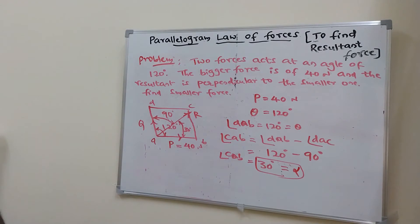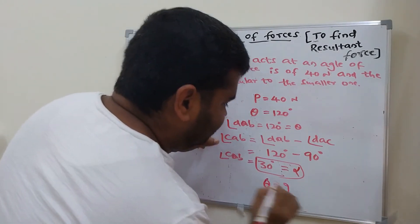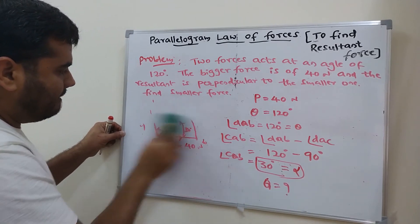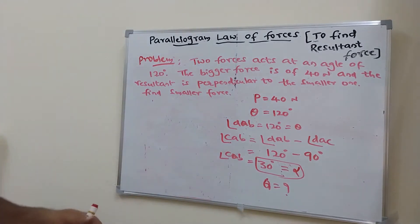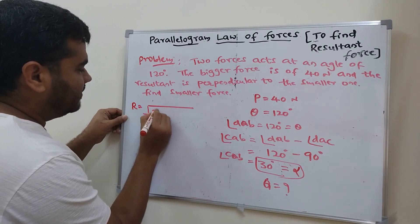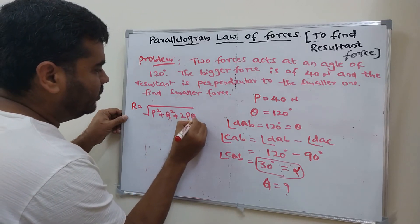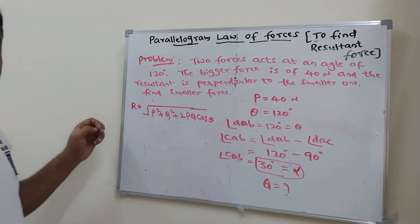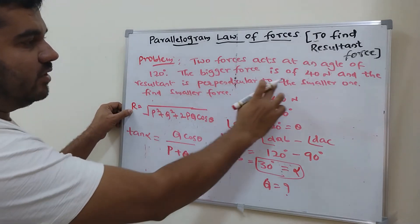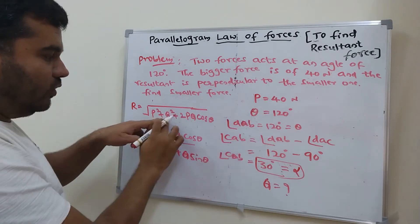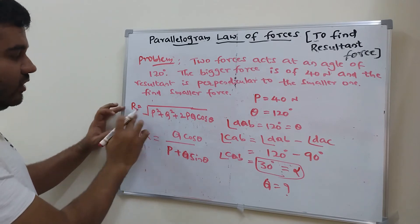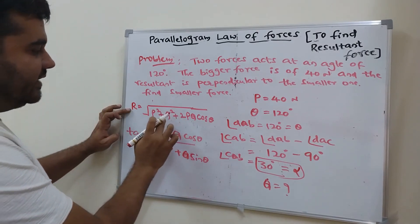Now, the given data are: P = 40 N, theta = 120°, alpha = 30°. We need to find Q. If we use the resultant formula R = √(P² + Q² + 2PQ cosθ), we have two unknowns — R and Q — so we cannot use it. Instead, we use the formula: tan alpha = Q sinθ / (P + Q cosθ).